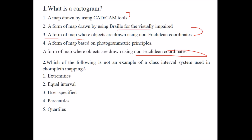Which of the following is not an example of a class interval system used in choropleth mapping? Options: extremities, equal interval, user specified, percentile and quartiles. Equal interval is interval-based, user specified also allows you to give a class, and percentile and quartiles are also class-based. So the answer is extremities.